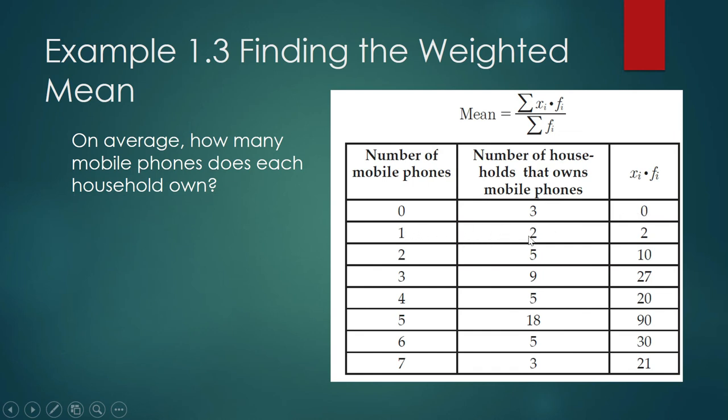1 times 2. That's 2. So on and so forth. 5 times 18. That's 90. 7 times 3. That's 21. You're just multiplying and then you will get the sum of x sub i times f sub i. That is how we interpret this. That is how this is math language.